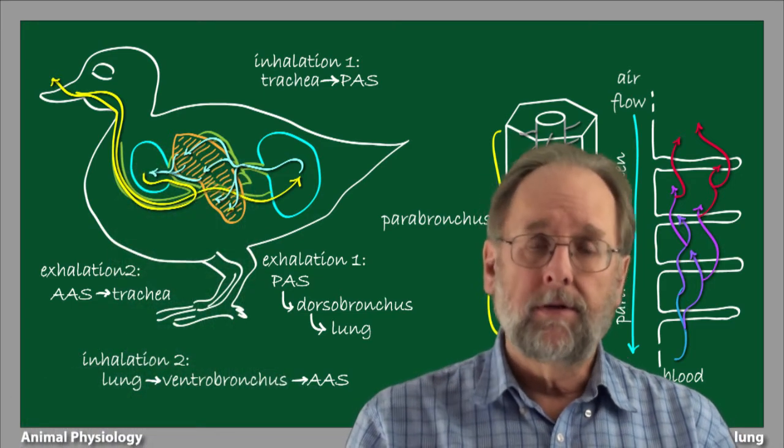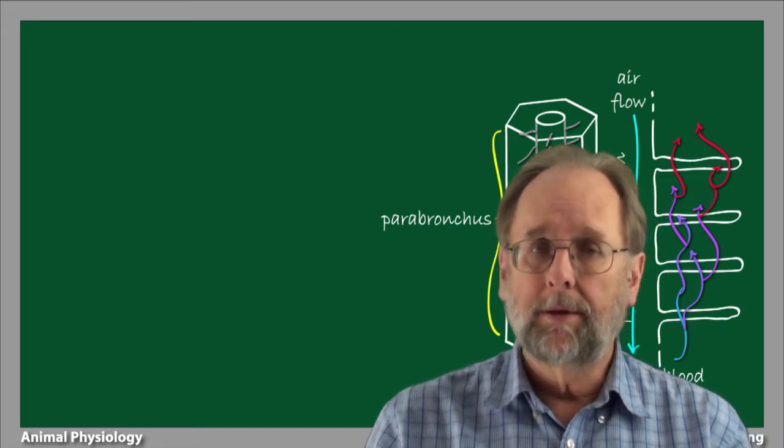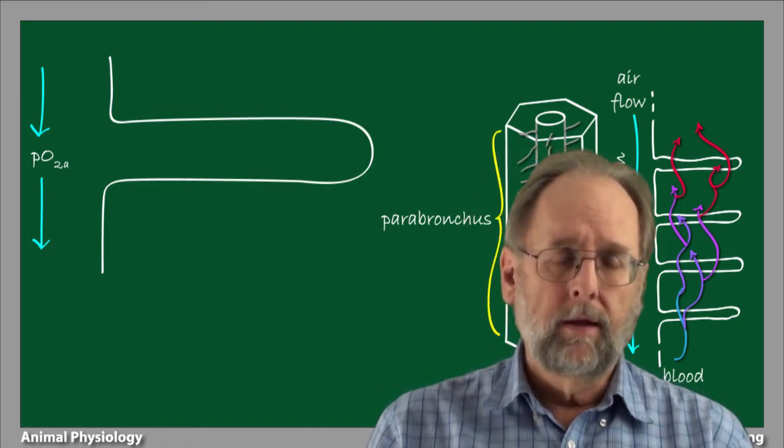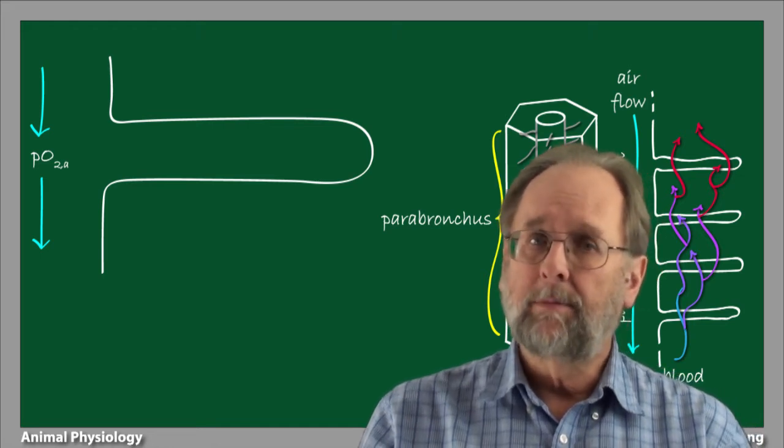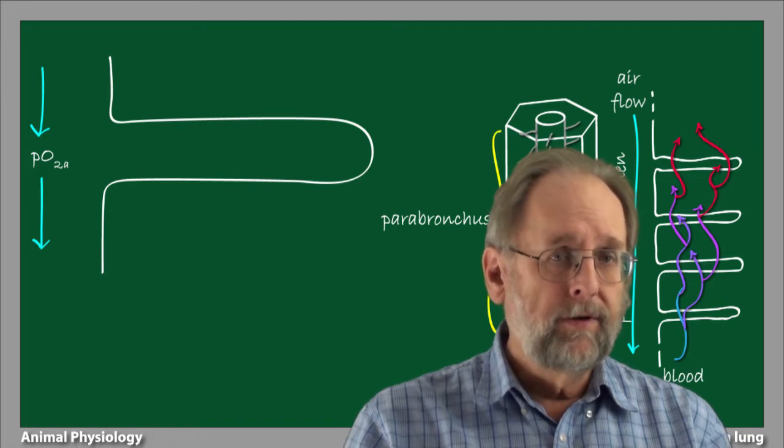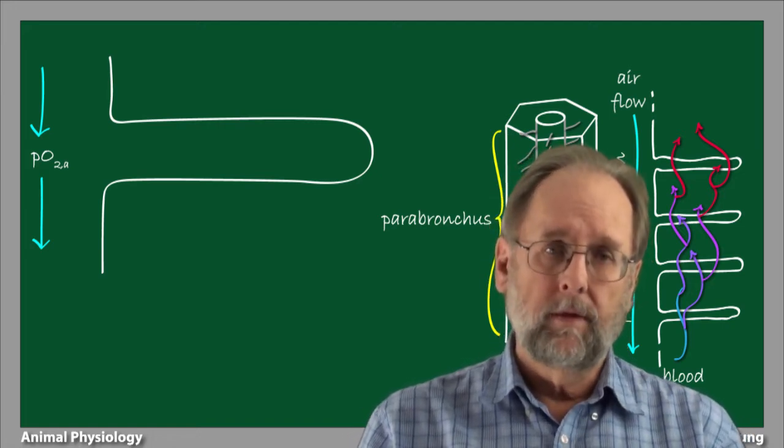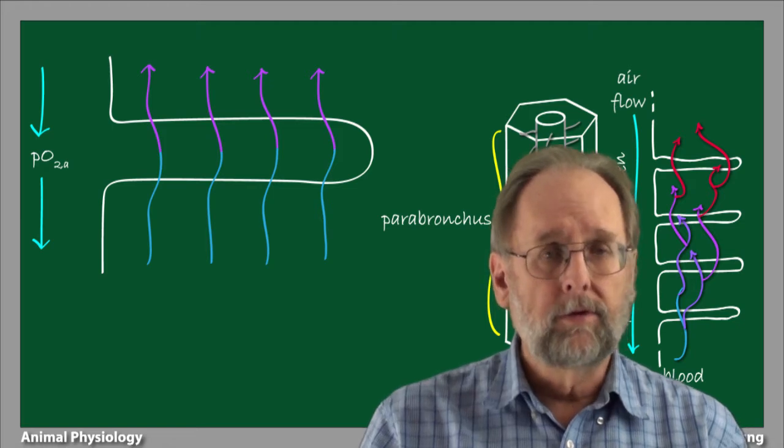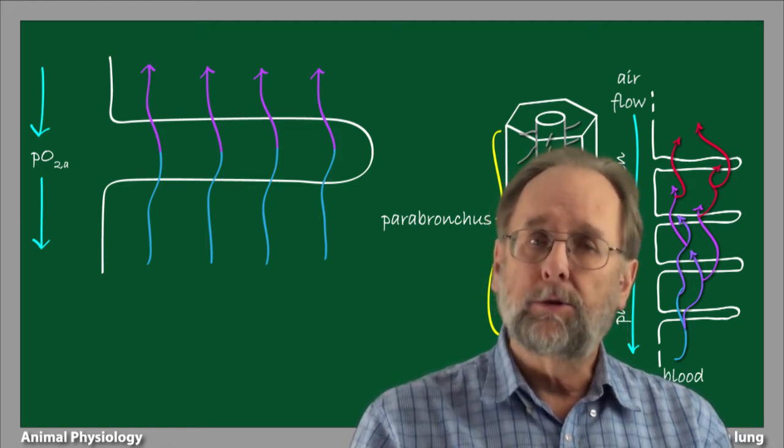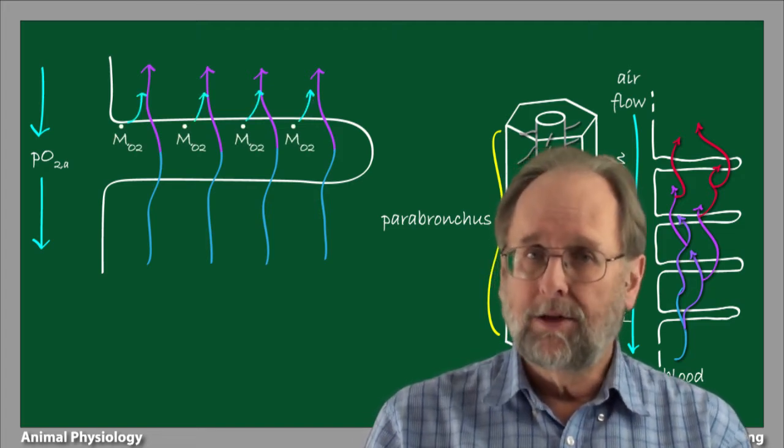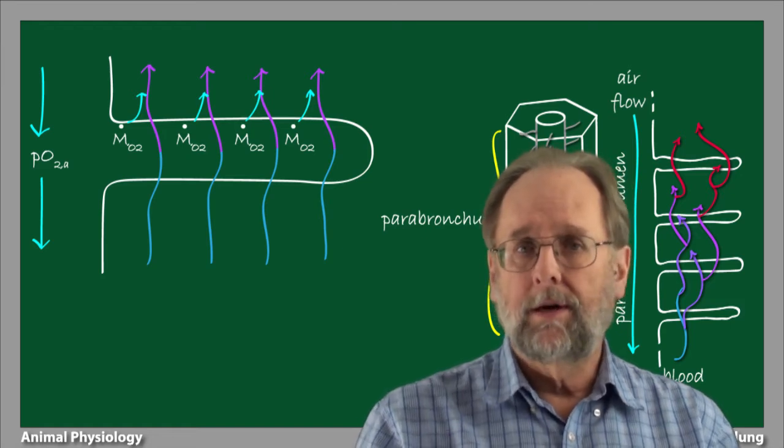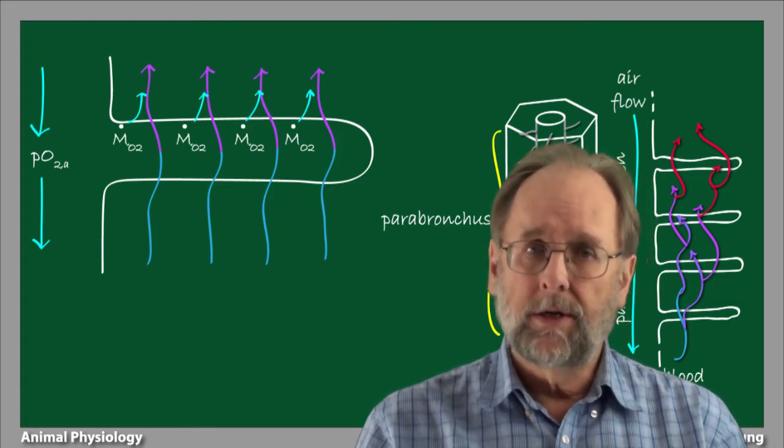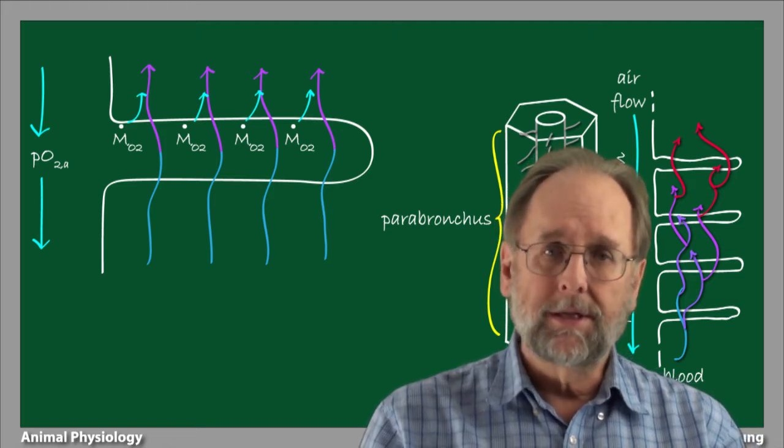Let's take a closer look at the fluxes of oxygen between the parabronchus, the air capillaries, and the blood. Here's a single air capillary, extending to the right, with the parabronchus on the left. Air flows downward through the parabronchus, and because this is freshly inhaled air, its partial pressure will be very close to the atmosphere's. At the same time, blood is flowing past the capillary in a countercurrent direction to the airflow through the parabronchus. As blood flows past the air capillaries, there's a mass flux of oxygen into the blood, which oxygenates it. Because the oxygen partial pressure in the blood is everywhere lower than the oxygen partial pressure in the air capillary, mass flux of oxygen into the blood occurs along the air capillary's entire length.